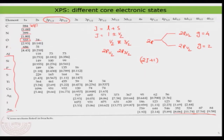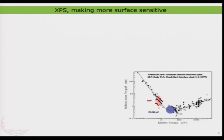We have already talked about how photoelectron spectroscopy is quite surface sensitive because most of what you are measuring comes from a region of just a few nanometers around the surface. So it is a surface-sensitive technique.